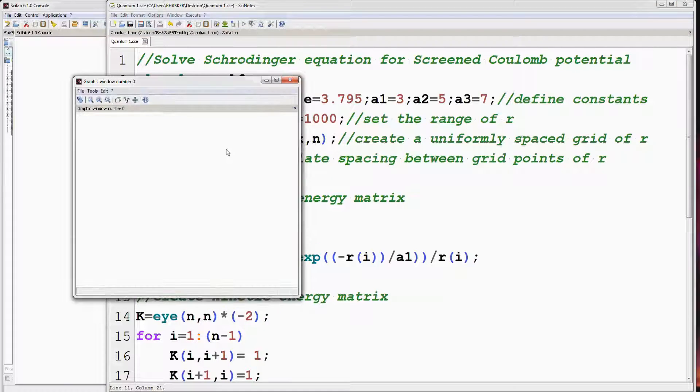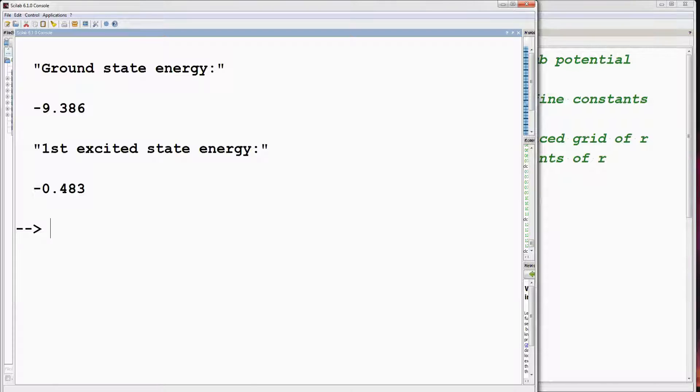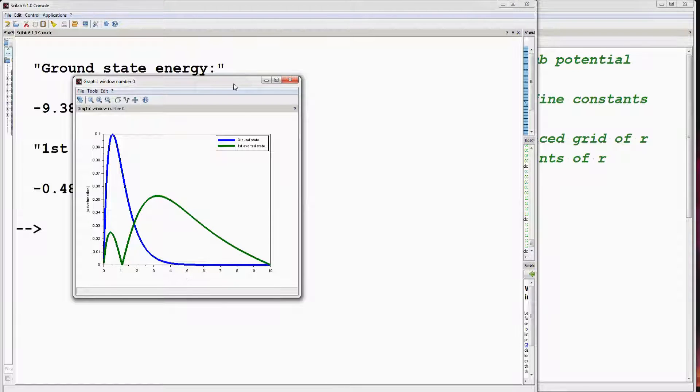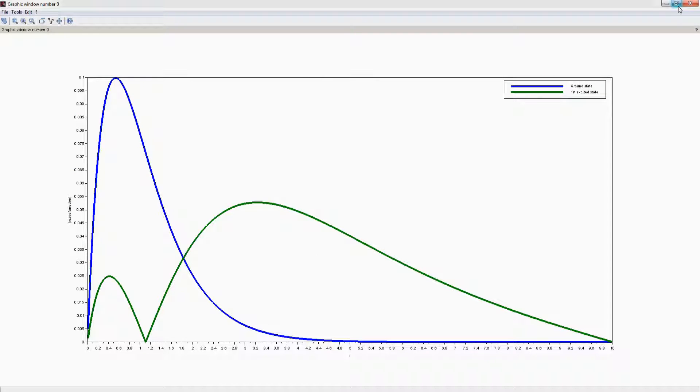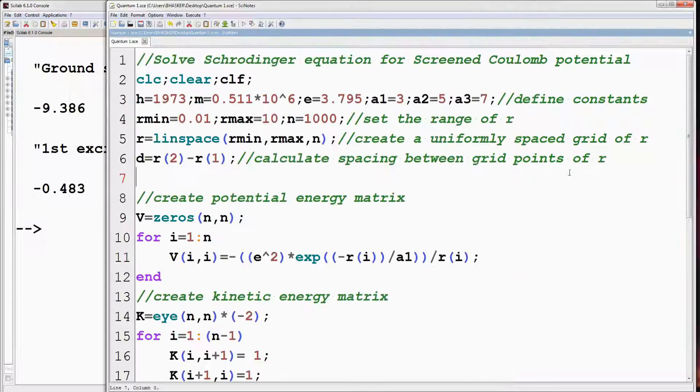Rest will remain unchanged. Let's run the program. So we get the values of ground state and first excited state energy along with the corresponding wave functions for a equal to 3 angstrom.